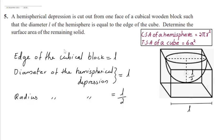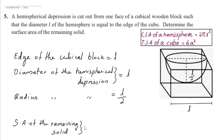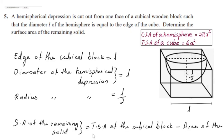We have to find the surface area of this remaining solid. For this solid, we can see the inner curved surface area of this hemispherical depression. So, the surface area of the remaining solid is the total surface area of this cubical block minus the area of this circular region, which is the base of this hemisphere, plus the inner curved surface area of this hemisphere.